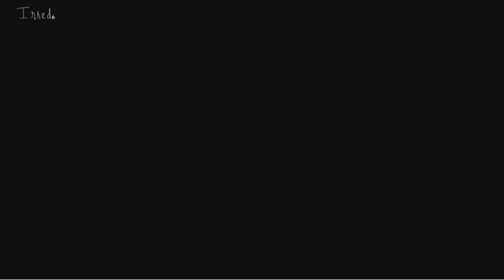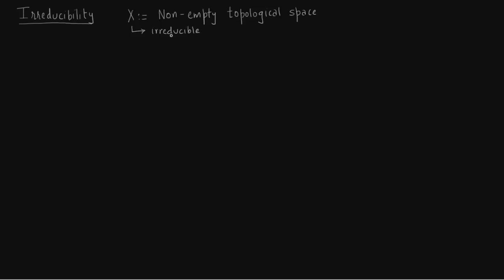On this slide we describe the irreducibility of the space. We will associate irreducibility with some algebra. The starting point is a set X, which will most likely be an affine algebraic set. For now, consider X as a non-empty topological space. We want to give a definition of when X is irreducible: if you write X as a union of two closed sets U1 and U2, then either X equals U1 or X equals U2.